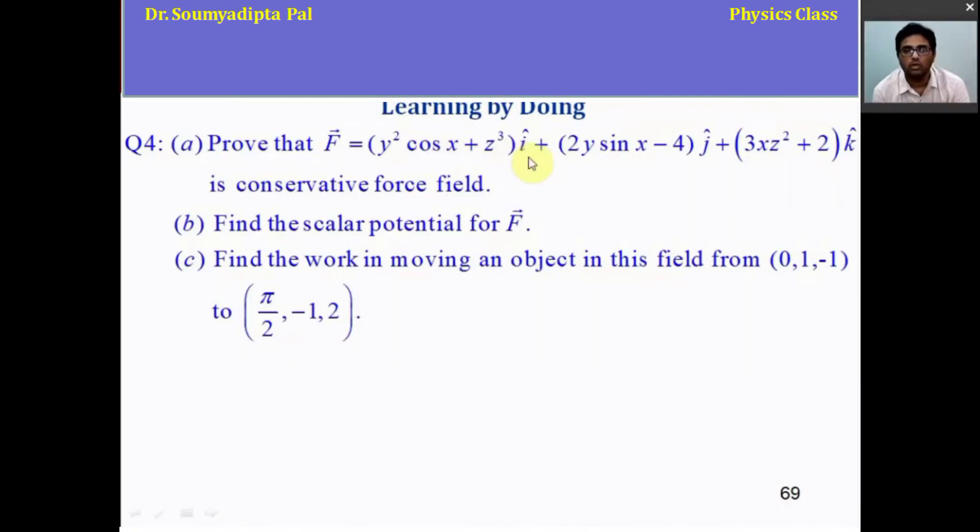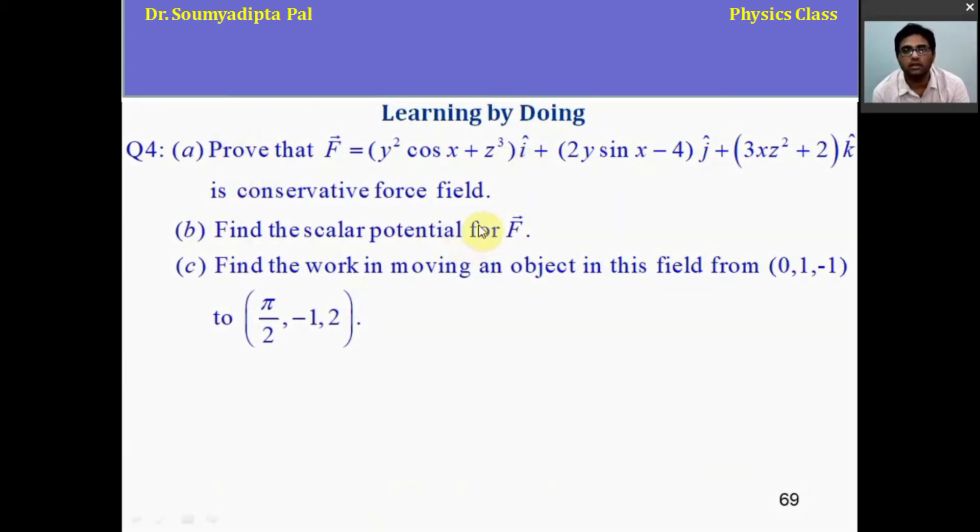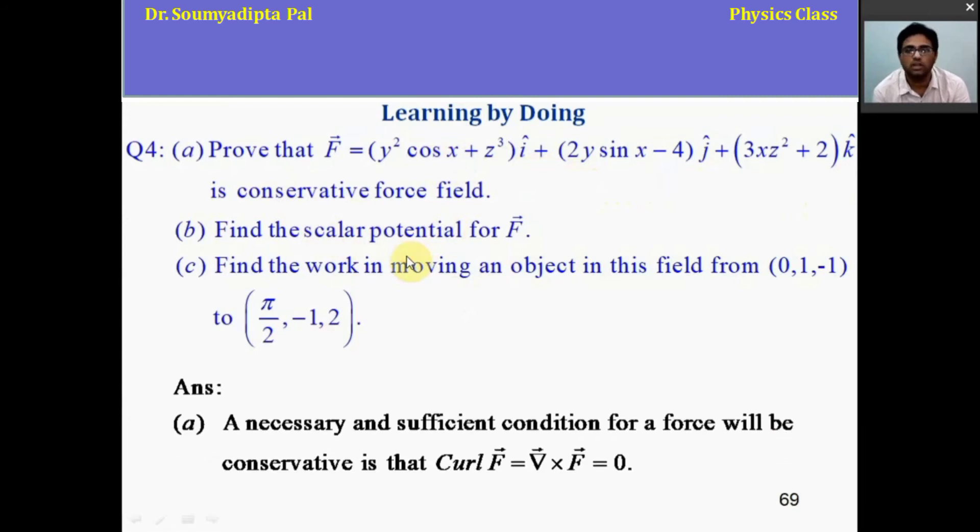Now, let's discuss one problem which involves the concept of gradient. And from there, we have to evaluate work done by this vector field or force field which is of this form. y square cos x plus z cube y cap plus 2 y sin x minus 4 j cap plus 3 x z square plus 2 k cap. Now, first we have to prove that this vector field is conservative field. So for that, the necessary and sufficient condition is curl of that force field will be 0.